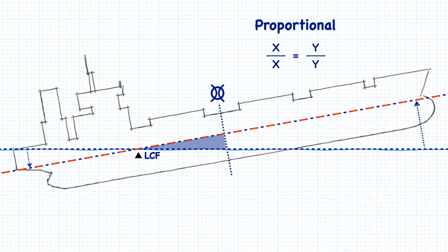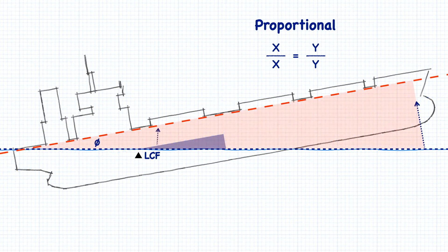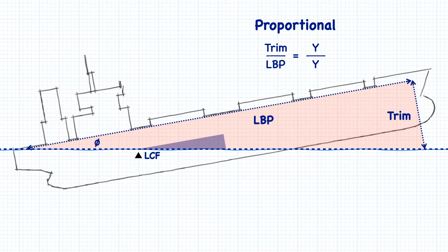Now, if we were to draw a line here, what we get is another similar triangle, where this side is the total trim forward and aft, and this side is the length between perpendiculars.